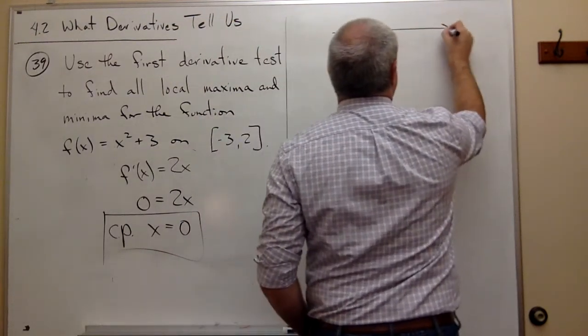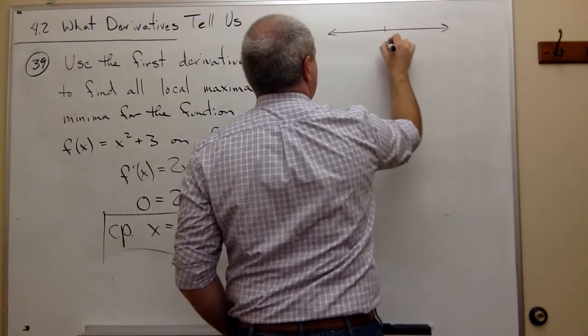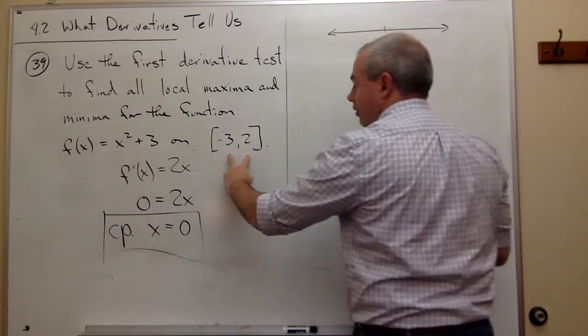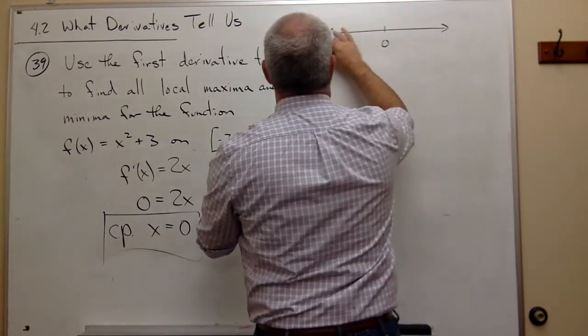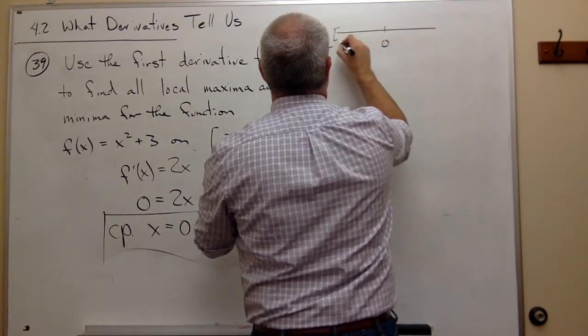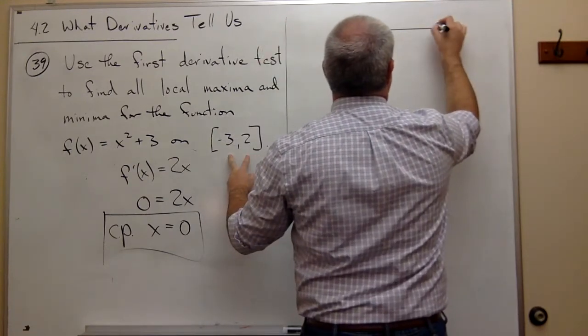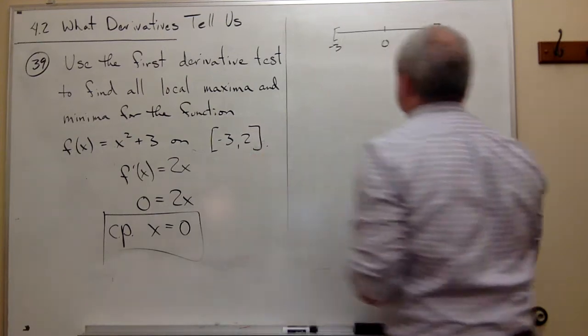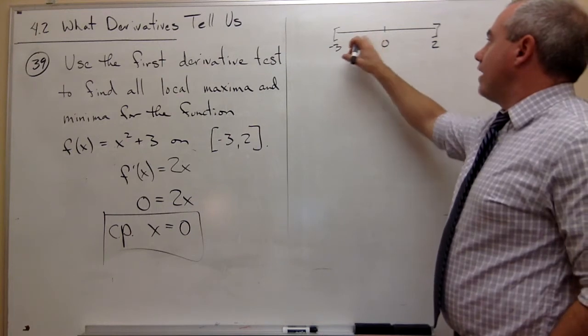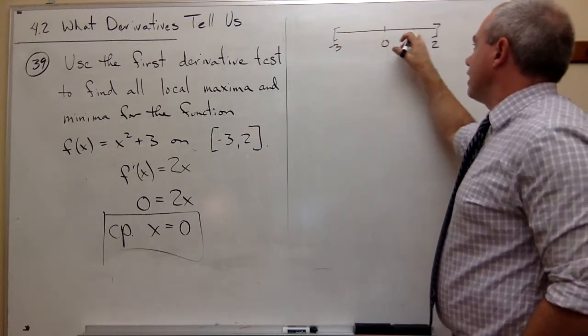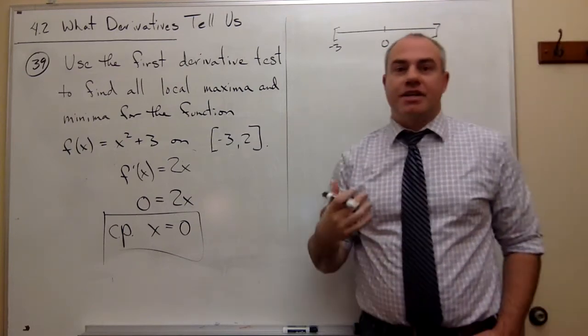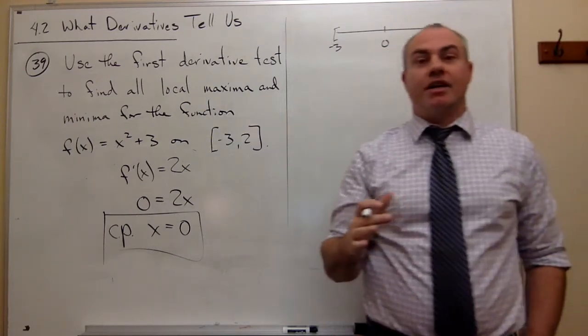Now I can put that critical point on a number line. Notice my critical point is in my interval of interest. I don't necessarily need these arrows because I'm just interested in the interval from -3 to 2. Now I test some points between -3 and 0, and between 0 and 2, to see if the function is increasing or decreasing on those intervals.